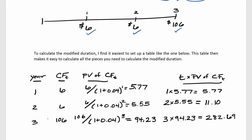This bond has a three-year maturity so there are only three years. Then there's a cash flow associated with this bond in each of those years: in year one we receive six dollars, year two we receive six dollars, and in year three we receive the six dollar coupon plus the additional hundred dollars in face value.